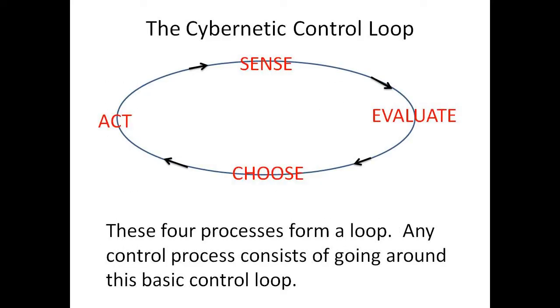These four processes—act, sense, evaluate, choose—form a loop. Any control process consists of going around this basic control loop.